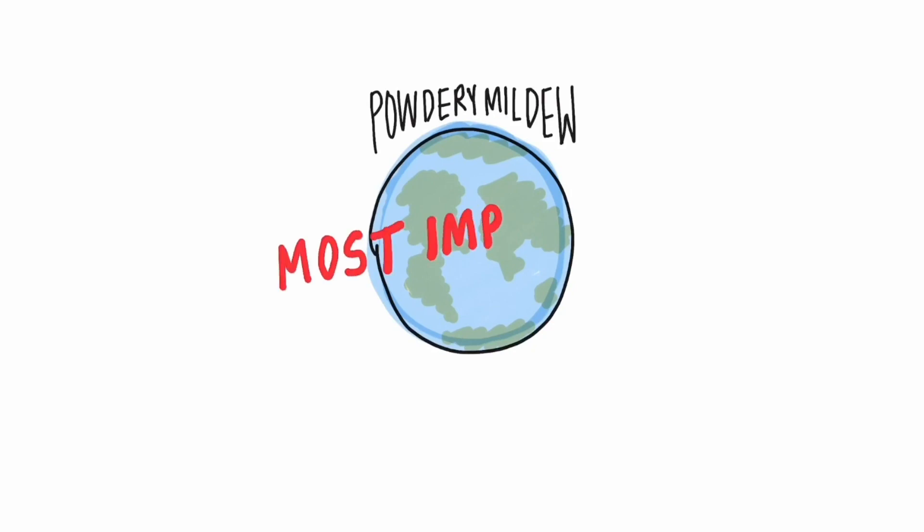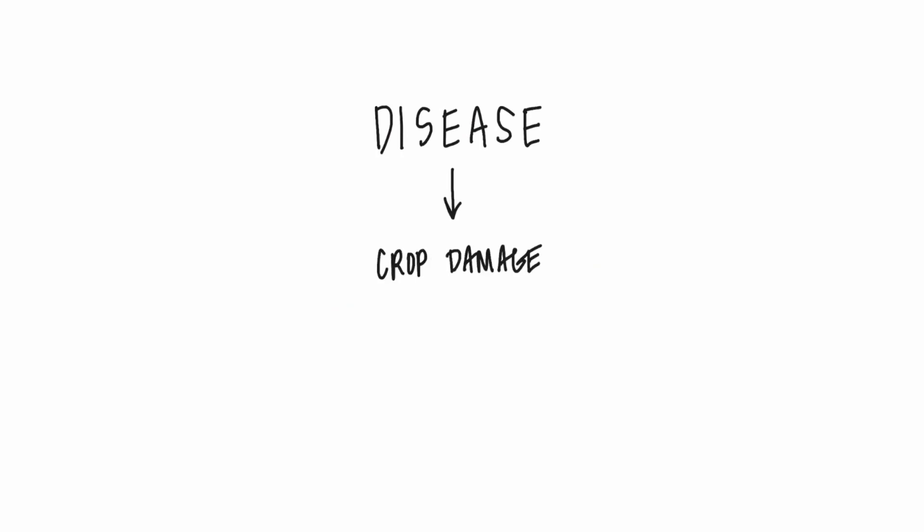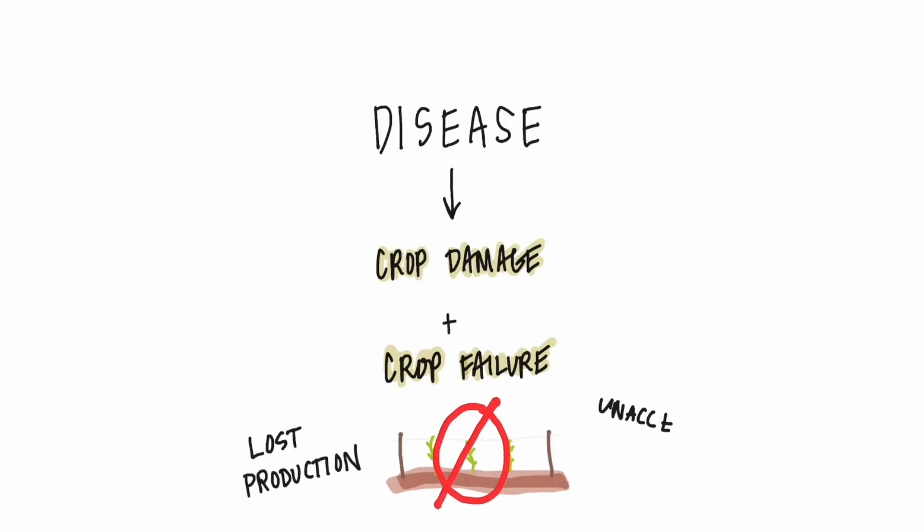Powdery mildew is one of the most important diseases of hop worldwide. The disease can cause severe crop damage and in some cases entire crop failures due to lost production and unacceptable cone quality.